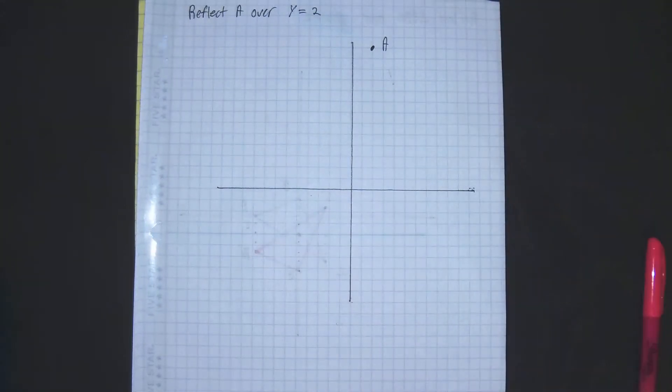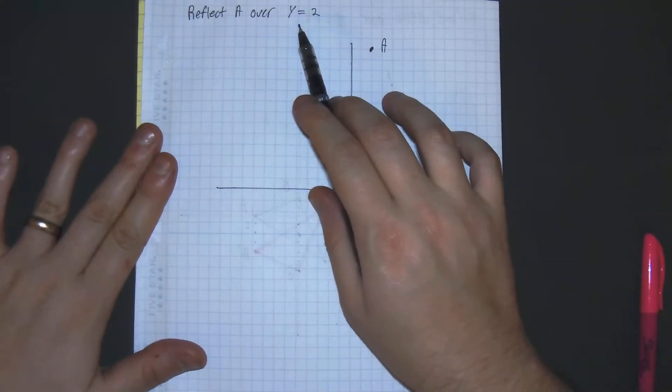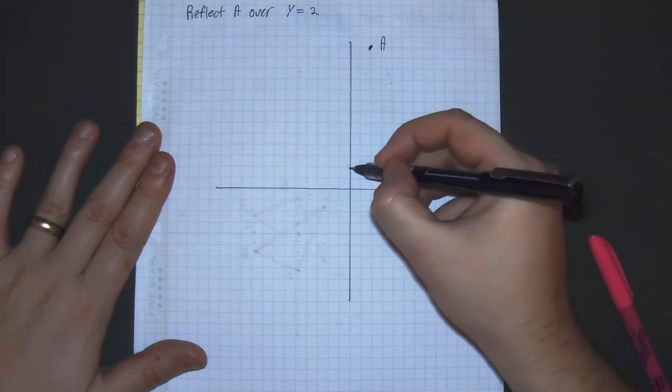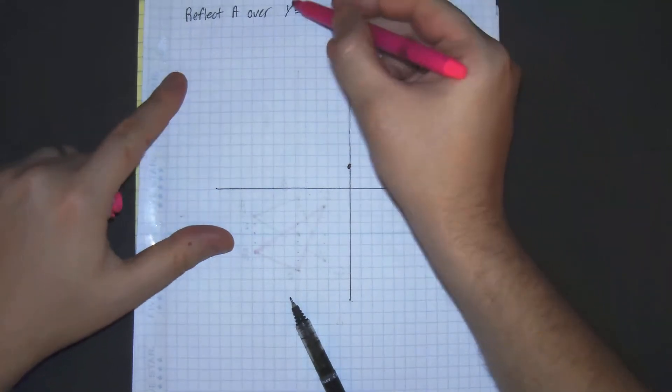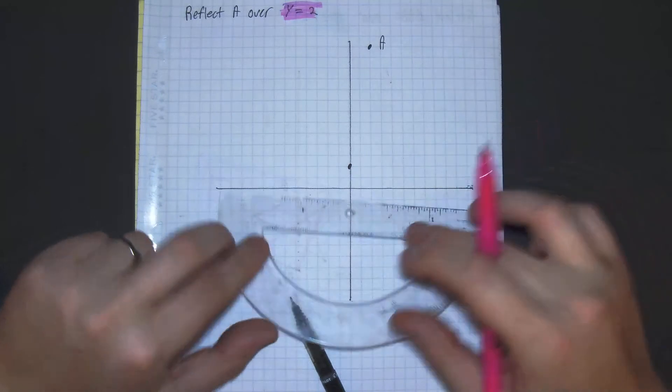Reflect A over y equals 2. So right there, that's a line with zero slope, and all values of y equal to 2. X-axis, y-axis, so right here our y value would be right here. Y equals 2 would be a straight line right here.